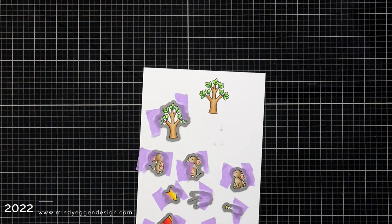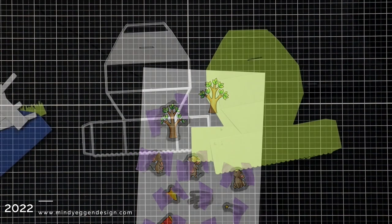After everything is all colored in, I lined up the coordinating dies, held them in place with a low tack tape, and die cut them out.